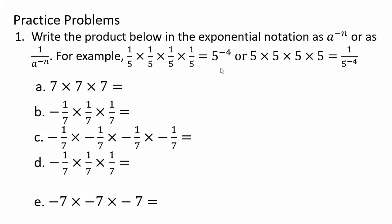Now look at some practice problems — see if you can write the product as a to a power negative n, or 1 over a to the power negative n. Assuming you've come back, let's start with the first one: 7 times 7 times 7, so that will be 1 over 7 to the negative 3 power, because we have 7 to the positive 3 power and to write it as a negative exponent you write it as 1 over.